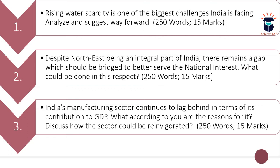The third question is: 'India's manufacturing sector continues to lag behind in terms of its contribution to GDP — what according to you are the reasons for it? Discuss how the sector could be reinvigorated.' Here you have to discuss the factors responsible for the poor performance of the manufacturing sector and suggest the way forward to re-energize it. Word limit is 250 and maximum marks are 15. These are the three questions from your dynamic part.